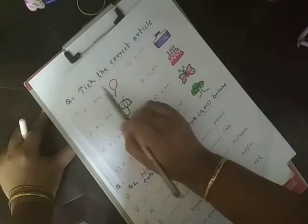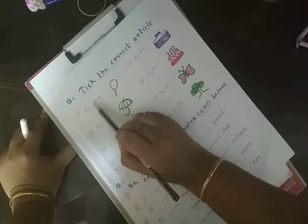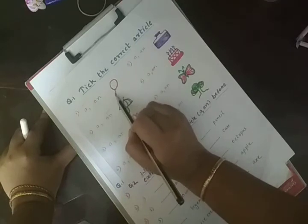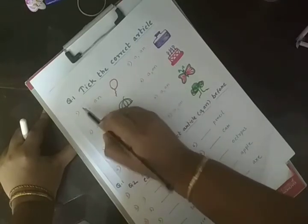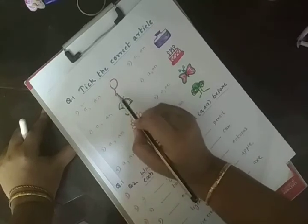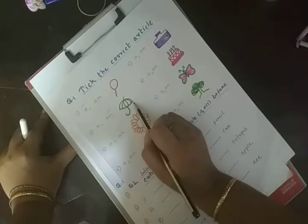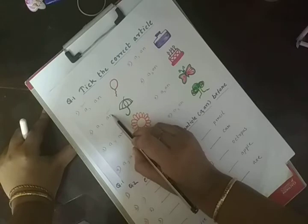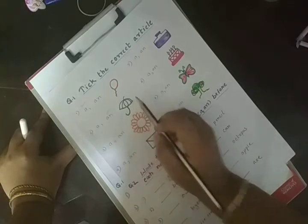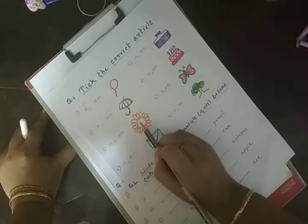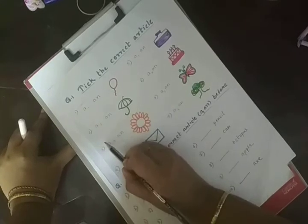So let's solve this. Tick the correct article. A, an. Balloon. As B is a consonant sound. So here I can tick a balloon. Umbrella. It is vowel sound. I can tick an. An umbrella. This is flower. It is again consonant sound. A flower.